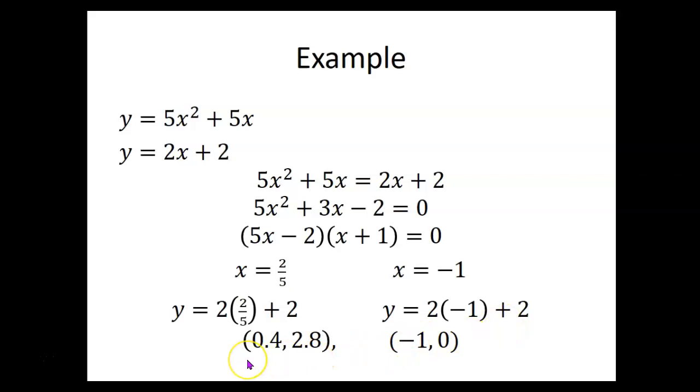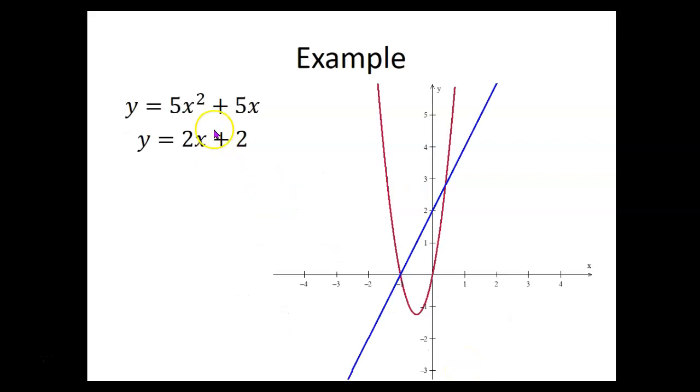So the two solutions, the two pairs of numbers are 0.4, 2.8 and negative 1, 0. And if we looked at the graphs of those two equations, the top one is a parabola, the bottom one is a straight line, and there are two points where they intersect. One of those two points was the point where x was 0.4 and y was 2.8. And the other one was the point where x was negative 1 and y was 0.